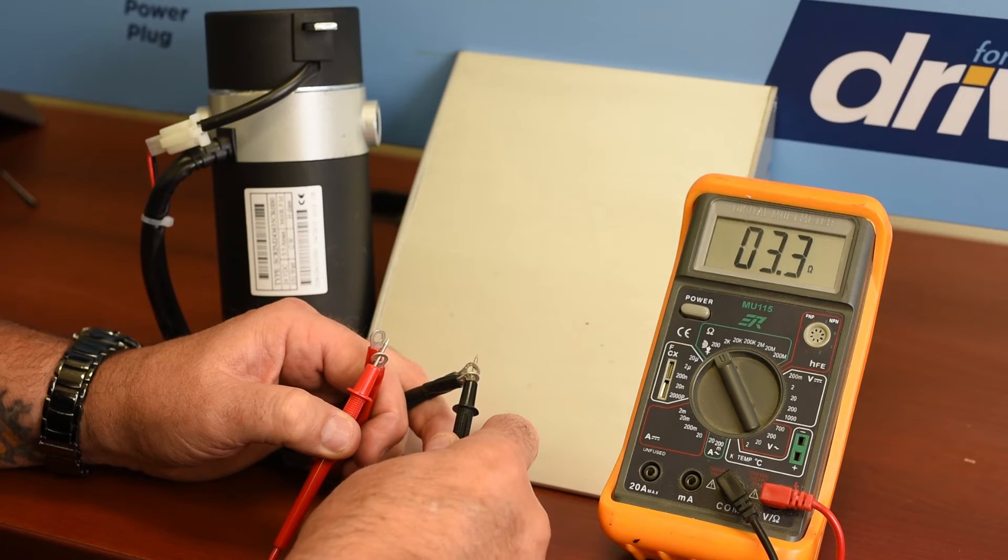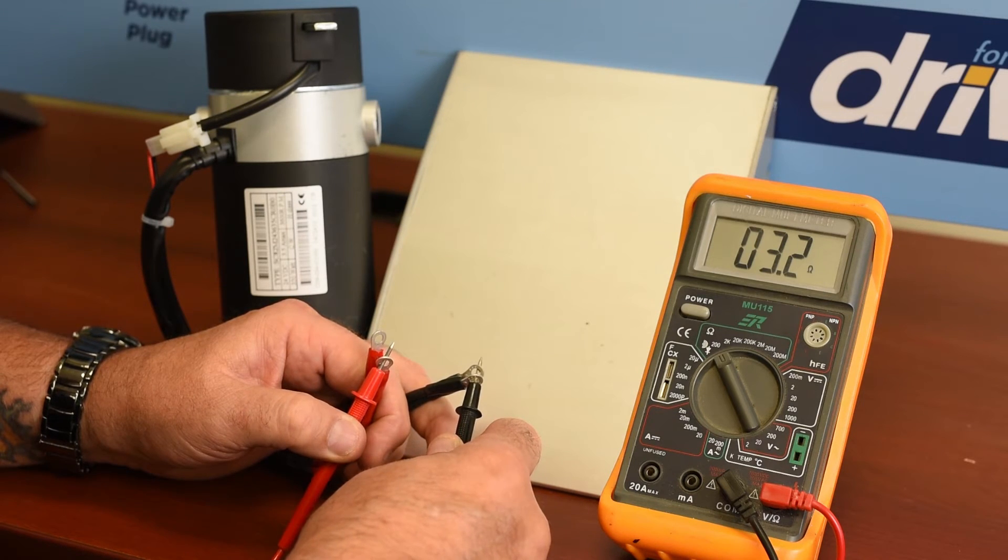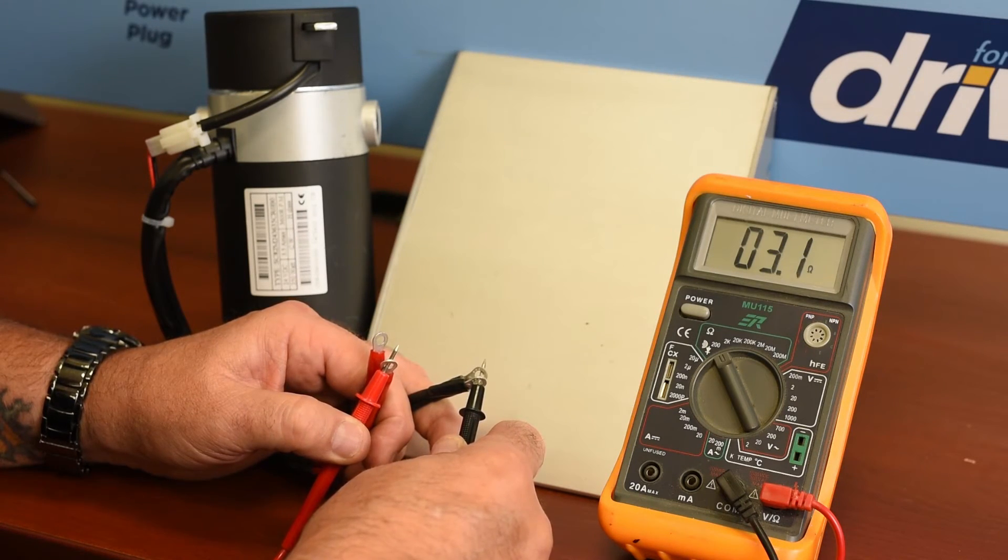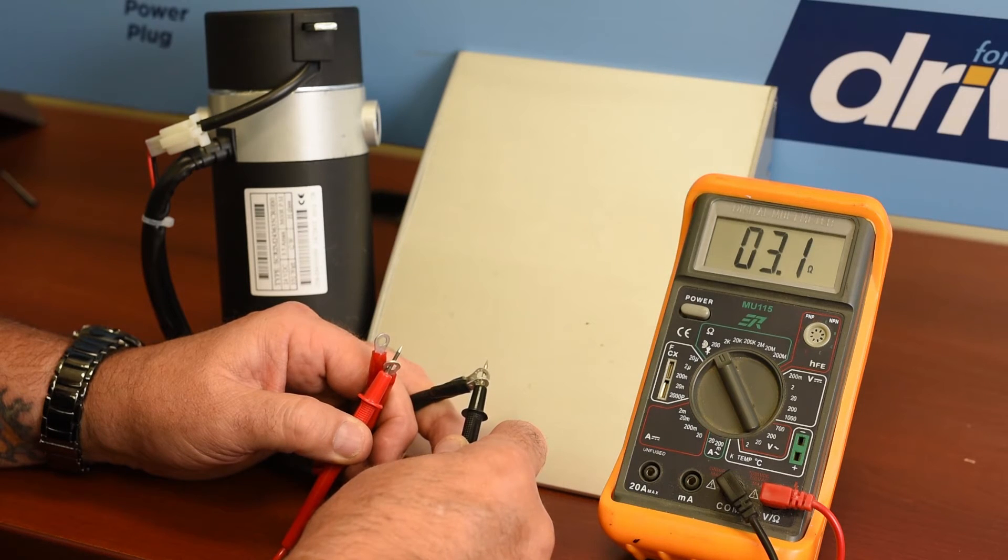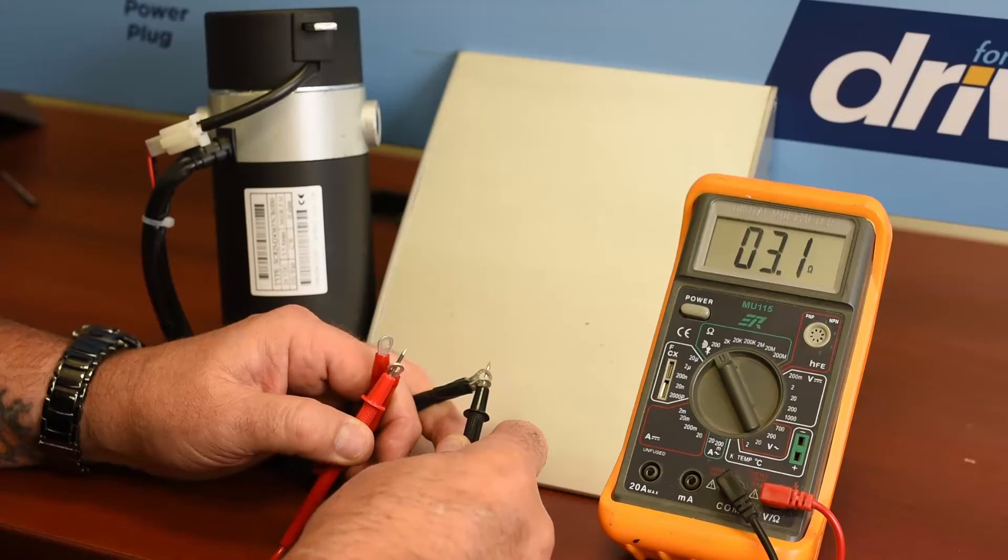And we see that we have 3.2 ohms of resistance. 3.1, 3.2 is a very good resistance for a motor this size. Again, anywhere between 0.8 and 7 ohms would be in scale, would be fine.